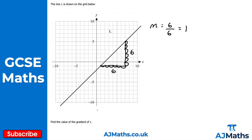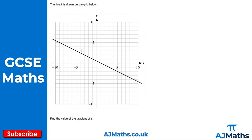Now let's look at the second question, which is slightly different because here we have what we call a negative gradient — the line is going downward. For the last one, the line went from bottom-left to top-right. Now we start in the top-left and go down into the bottom-right. I draw a right-angle triangle: going across one, two, three, four units, and going up one, two — but be careful, we're actually going down here, so that's minus two units.